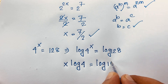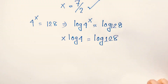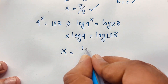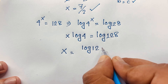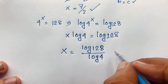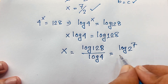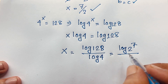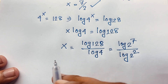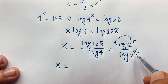According to the log formula, the exponent x moves in front: x·log 4 = log 128. Dividing both sides by log 4, we get x = log 128 over log 4. Now, 128 = 2^7 and 4 = 2^2, so this becomes log(2^7) over log(2^2).